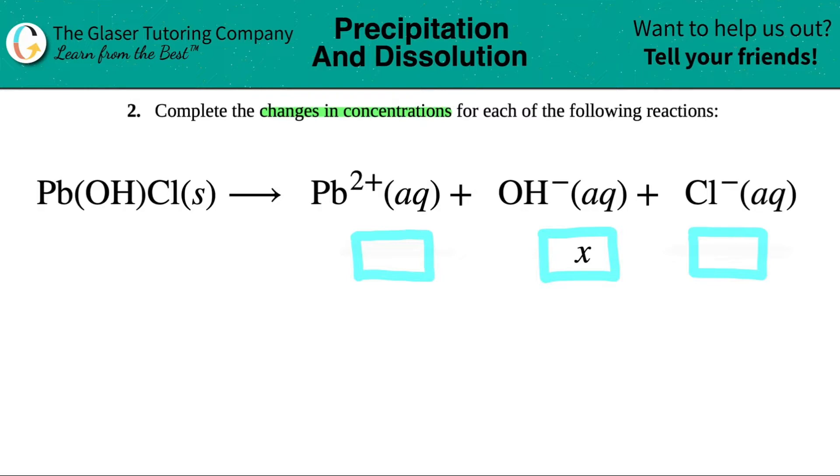Basically they're saying if we label the hydroxide, the OH-, as changing in X concentration, what would the change be for the other two ions, the Pb2+ and the Cl-? Well, changes in concentrations always come from your balanced equation, more specifically from your coefficients, the big numbers in the front.